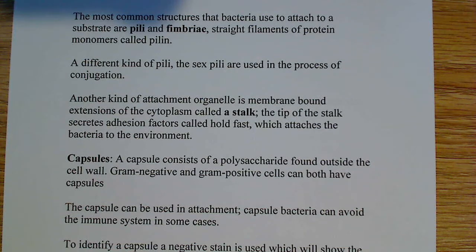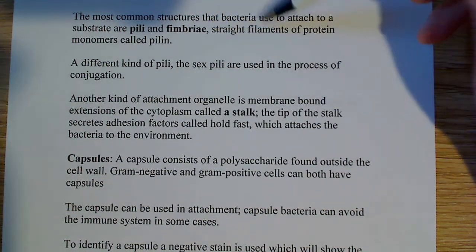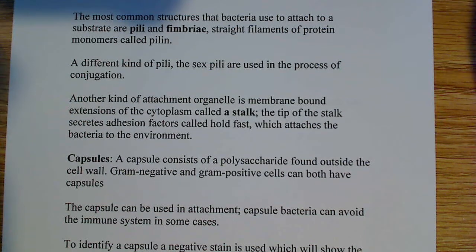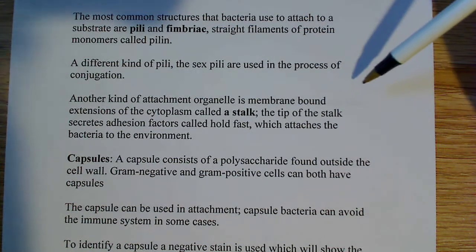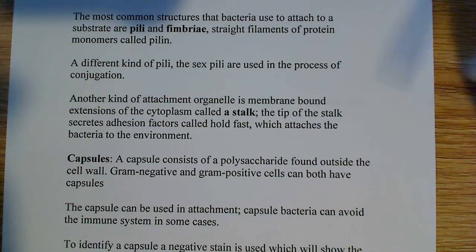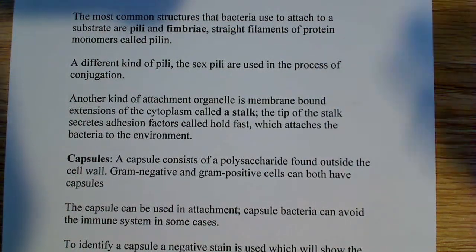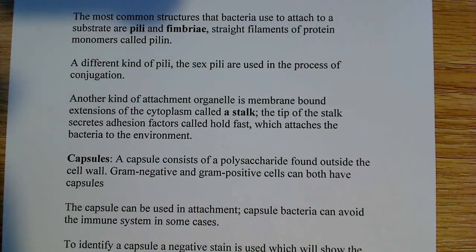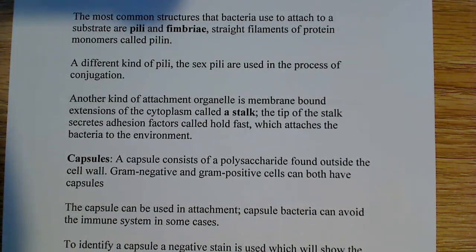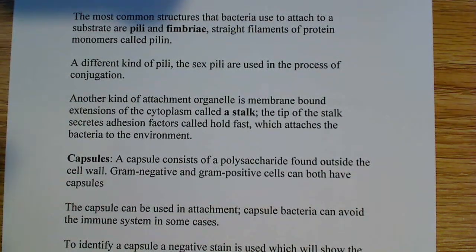Pili and fimbriae are straight chain filaments of protein monomers — they're made of protein. The stalk is a really interesting case because it's completely different. It's a membrane-bound extension of the cytoplasm, not a structure specifically made from polypeptides. It's an extension of the cytoplasm of the cell, which is a very different way of going about attachment than using pili.